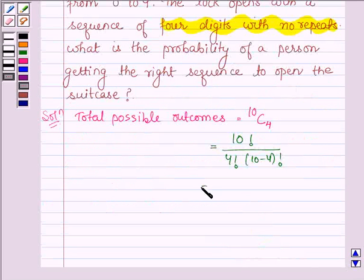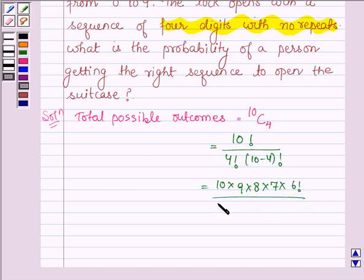And this equals 10 × 9 × 8 × 7 × 6 factorial. In the denominator, we have 4 × 3 × 2 × 1, which is 4 factorial, times 6 factorial.